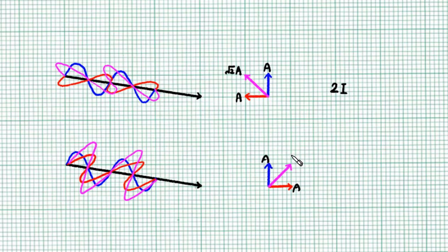So amplitude a, amplitude a, again the resultant has amplitude root 2a. So 2i again.